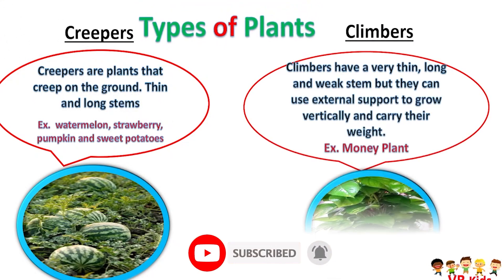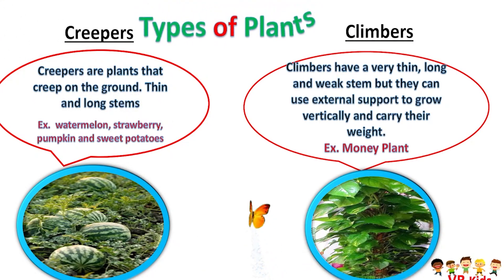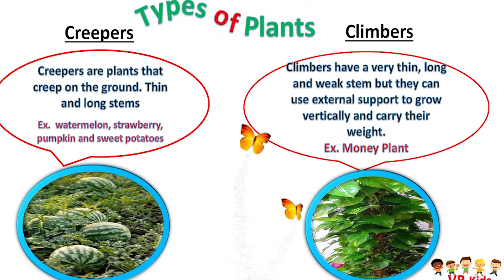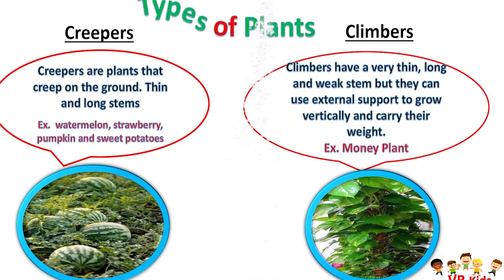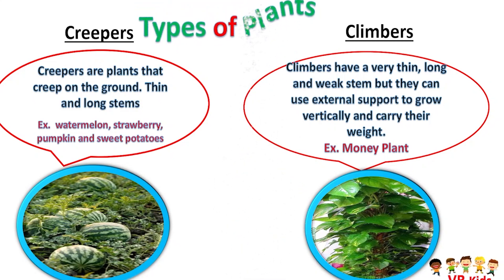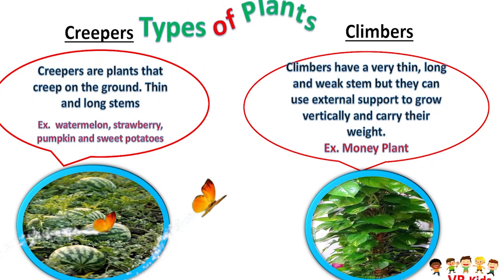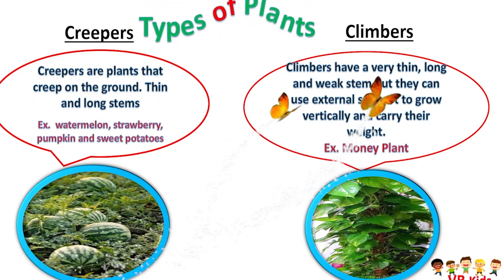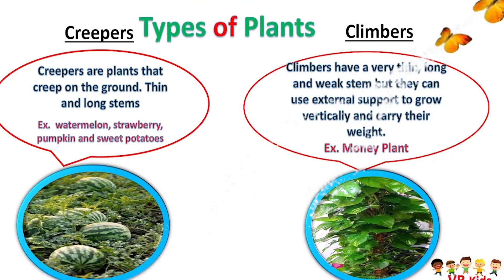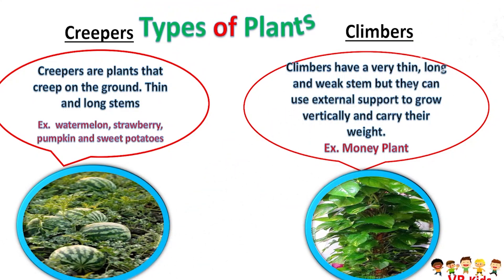Climbers have a very thin, long and weak stem, but they can use external support to grow vertically and carry their weight. Example: money plant.